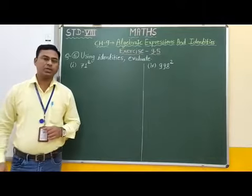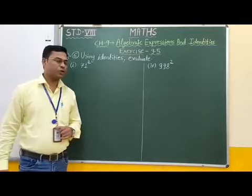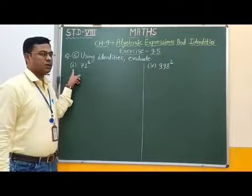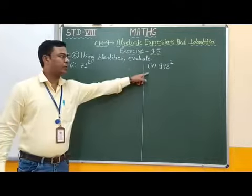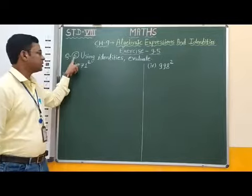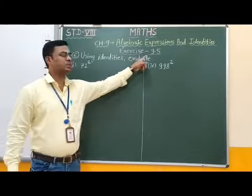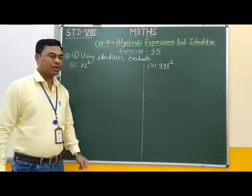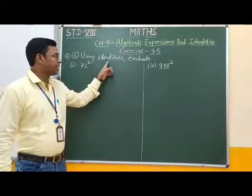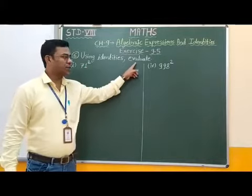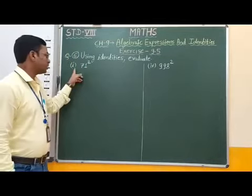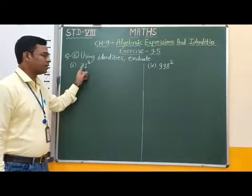Good morning students. In this video we are going to solve sub-questions 1 and 4 of question number 6 from exercise 10.5. The question is: using identities, evaluate first 71 square.